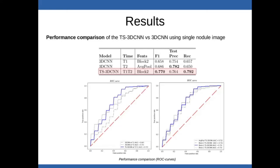Here we present the results of a comparative analysis between the proposed classifier, which takes into account the nodule evolution, and a classifier trained on nodules taken at time point 1 and another classifier trained with nodules taken at time point 2. In the table, we can see how our approach reached an F1 score of 77% in the test set, outperforming the other two models. On the left bottom side of the slide, we show a ROC curve with the performance of the three classification models. On the right side, we can see another ROC curve in which we provide the results of our method using the different feature maps of the network.